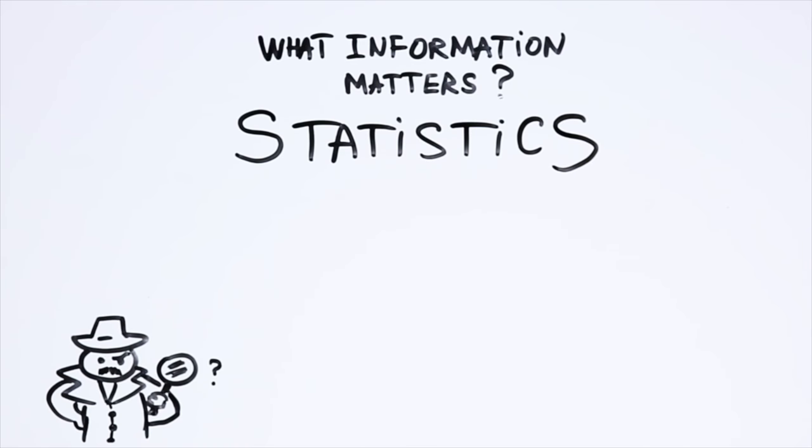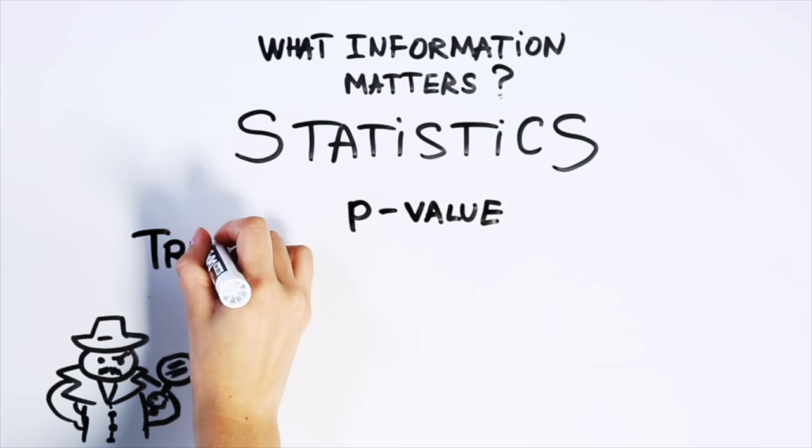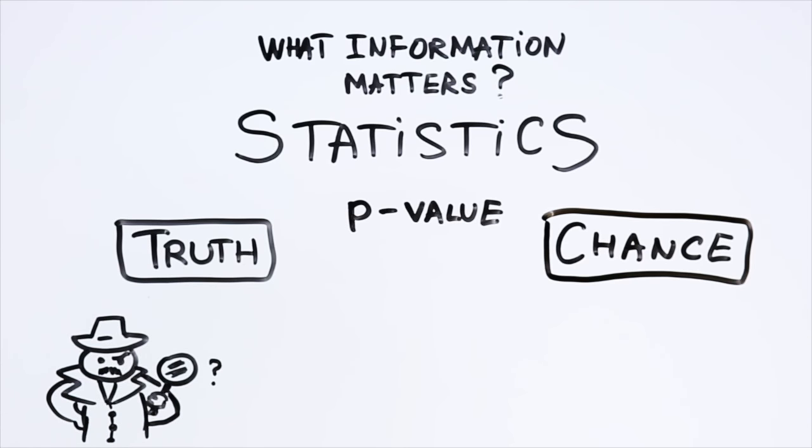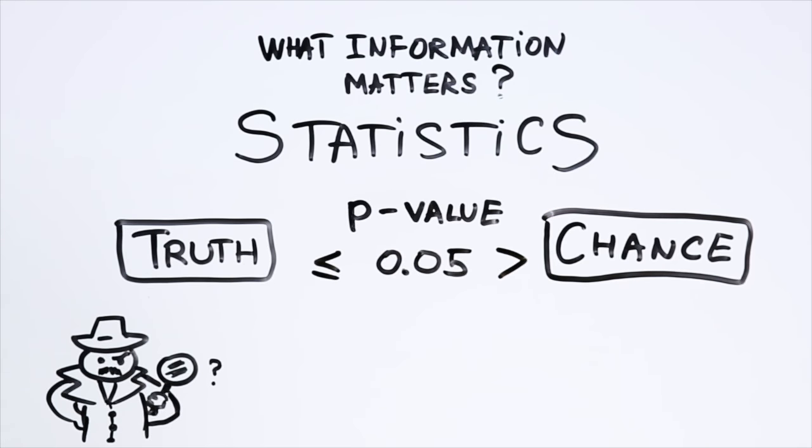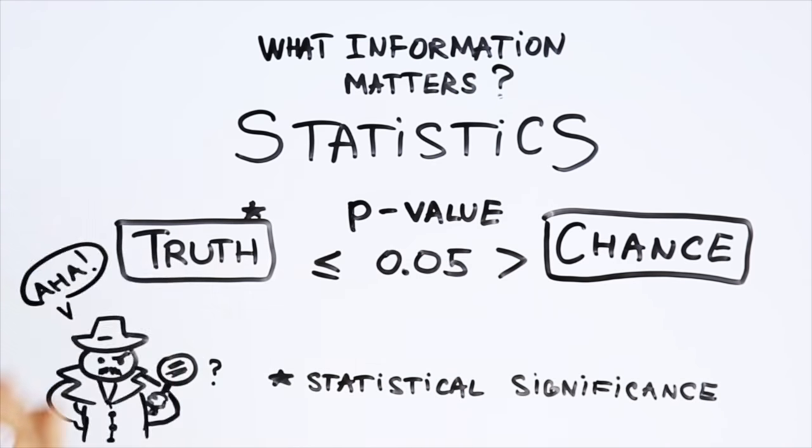One standard practice in analyzing data is to look at the probability, or p-value, to determine if the findings are likely to be true or are simply due to chance. The lower the p-value, the more likely it is that the results of the study represent reality, and did not just happen because of chance or random variations. Usually, epidemiologists consider a p-value of 0.05 or lower as indicating that the study results are statistically significant, which is just a fancy way of saying that there's less than 5% chance of these results being due to random variations.